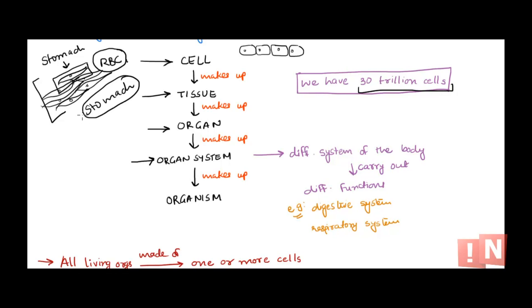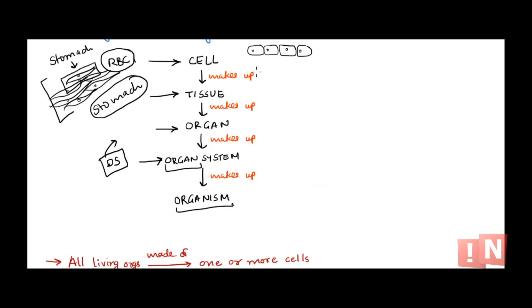For example, the stomach along with the small intestine, large intestine, liver, and esophagus together make our digestive system — many organs working together towards digestion of food. Similarly, we have a respiratory system, circulatory system, and skeletal system. When a group of organs works towards the same outcome, that becomes an organ system. When you combine all the organ systems, it becomes an organism.